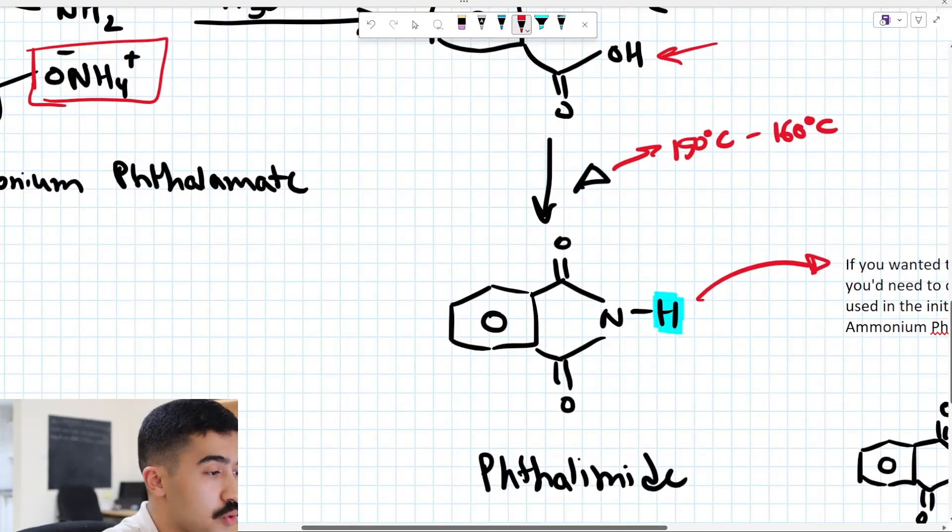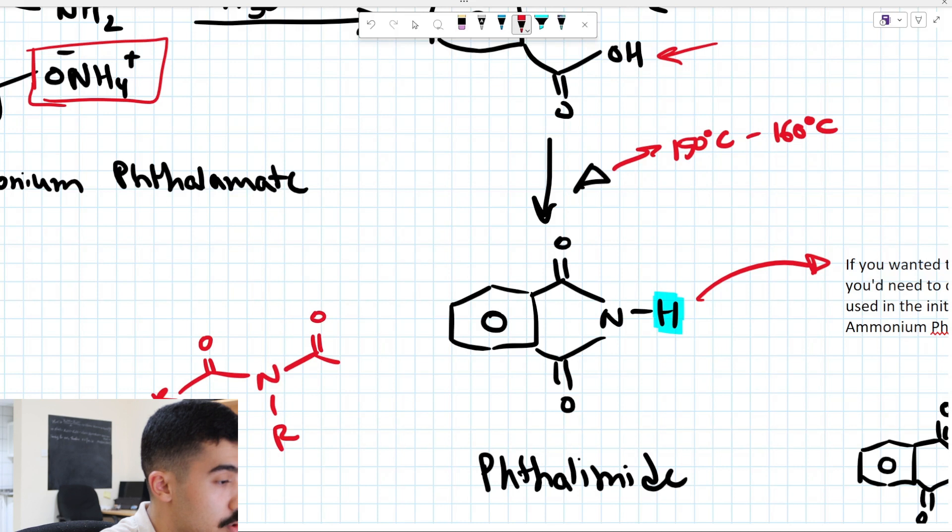And your amide functional group, remember, looks like this. Double bond O, N, R, double bond O, R. So this is amide. That's your amide functional group.